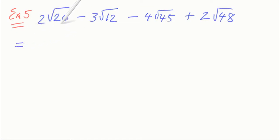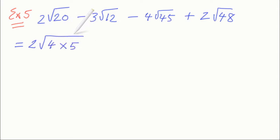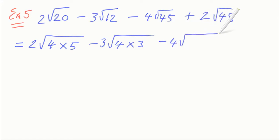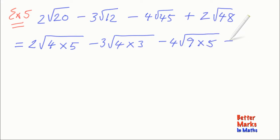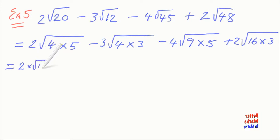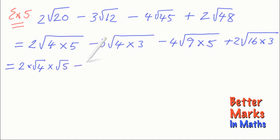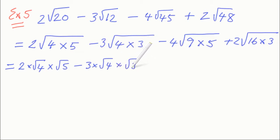In this next example you have to simplify the surds because none of them are like surds and they can all be simplified. The first term: 2 and root 20 — 20 equals 4 times 5, with 4 being the biggest perfect square going into 20. Minus 3 root 12: 12 equals 4 times 3. Minus 4 root 45: the biggest perfect square going into 45 is 9, so 45 is 9 times 5. And the last term, 2 root 48: the biggest perfect square going into 48 is 16, so 48 is 16 times 3.